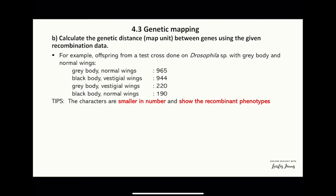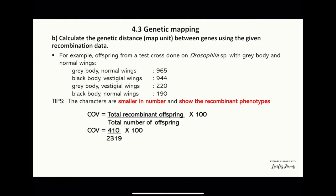To calculate the crossover value, we find the recombinant offspring, which consists of the two phenotypes with the smaller numbers. In this question, 220 and 190 are the recombinant phenotype offspring. So, total recombinant offspring equals 220 plus 190, giving us 410, divided by the total number of offspring, 2319, times 100.